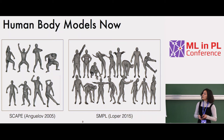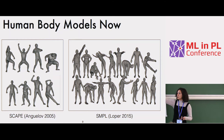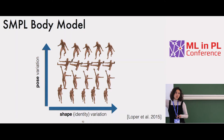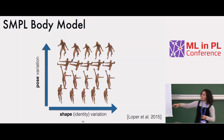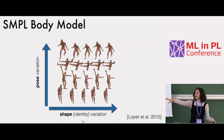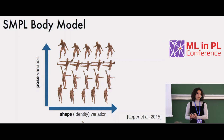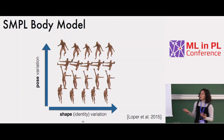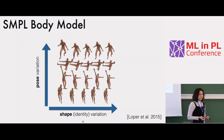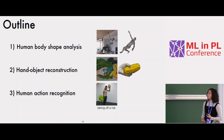Now, the body models we have are much more expressive. SCAPE and SMPL in the last decade have been very popular, and I'm going to talk about SMPL. It's a linear model that decomposes shape into two parameters: pose, which captures kinematic deformations due to posture, and shape, which is identity-specific — how tall or fat a person is. Shape is 10-dimensional, pose is 72-dimensional, so it's quite easy to work with, and you can still express a lot of deformations.